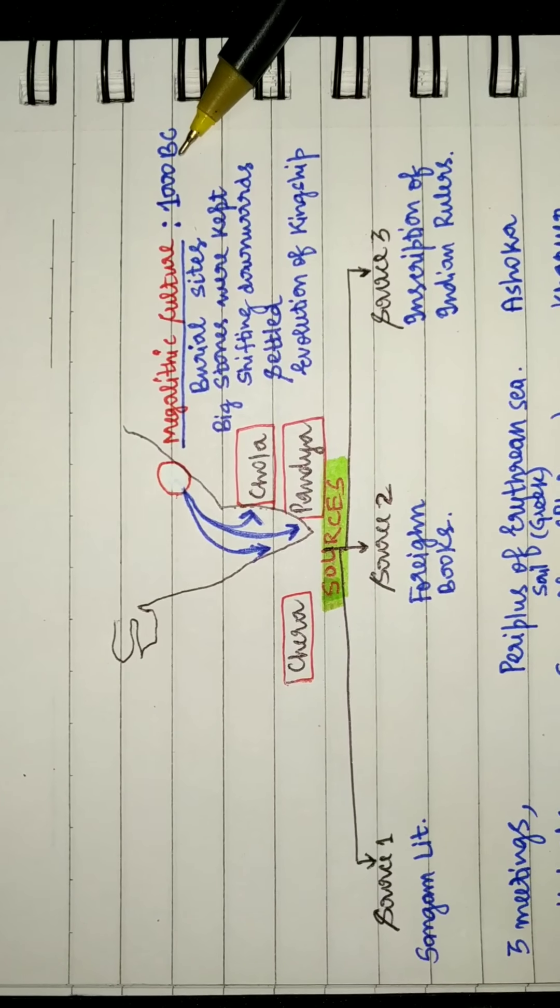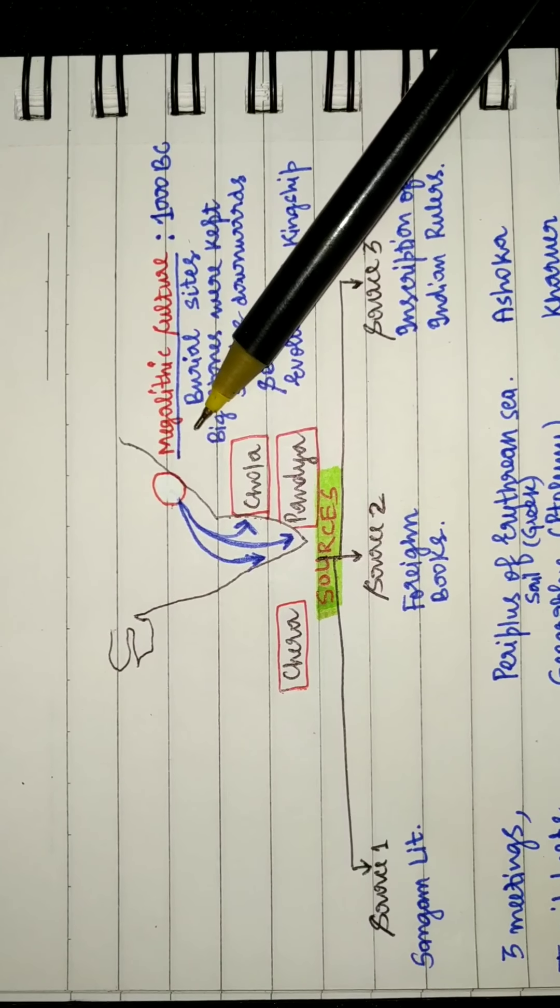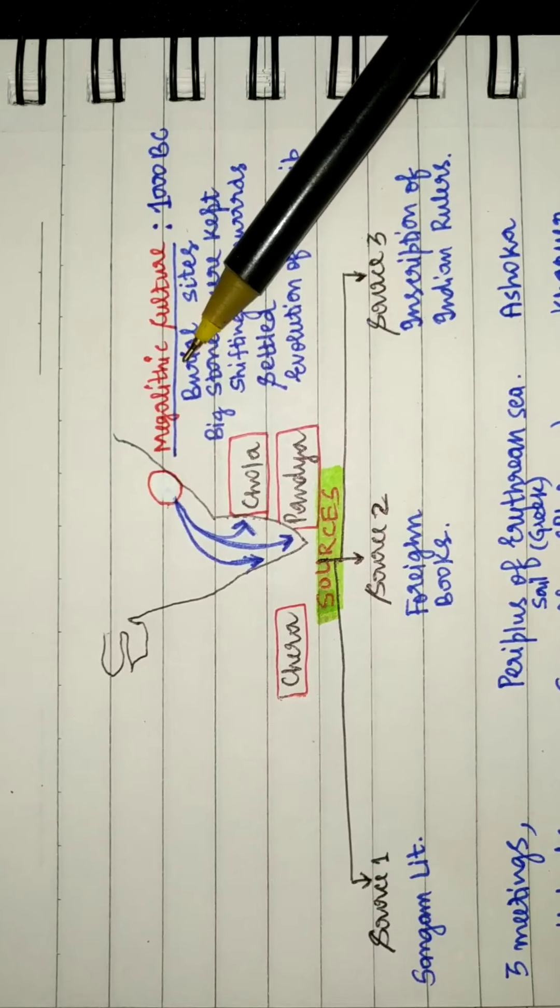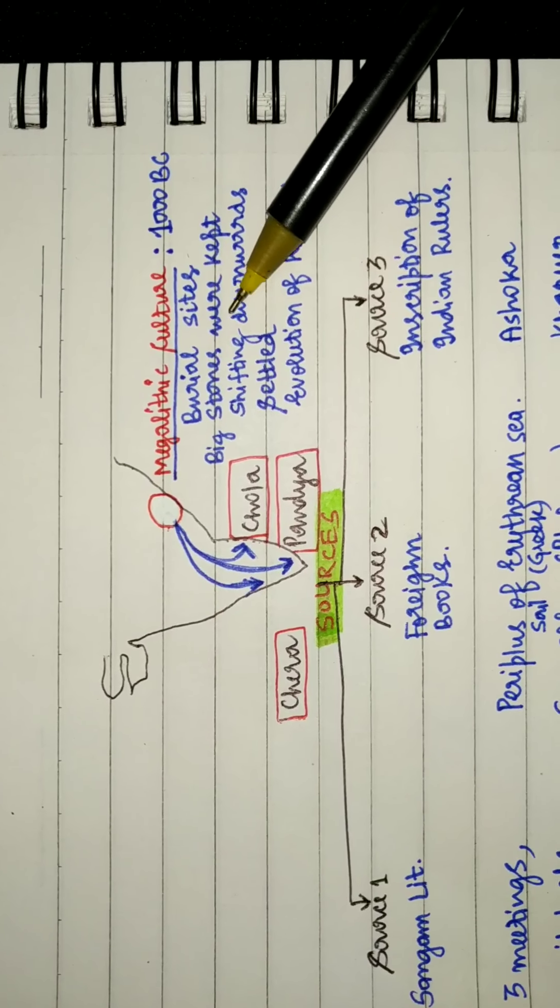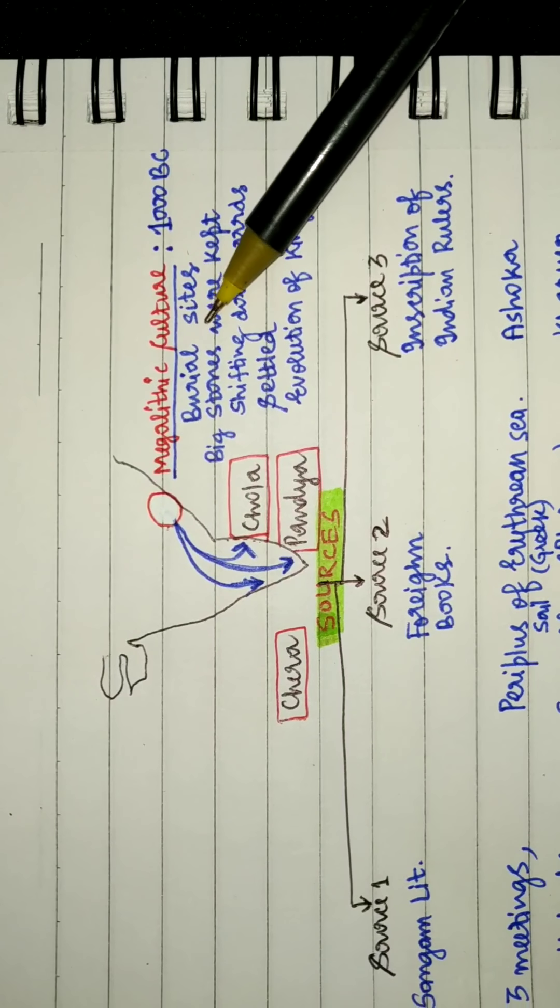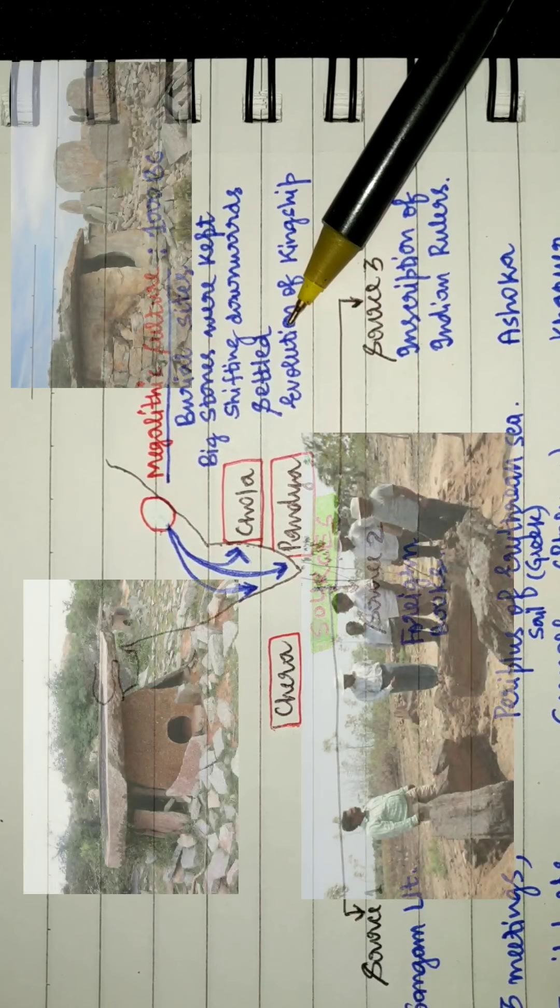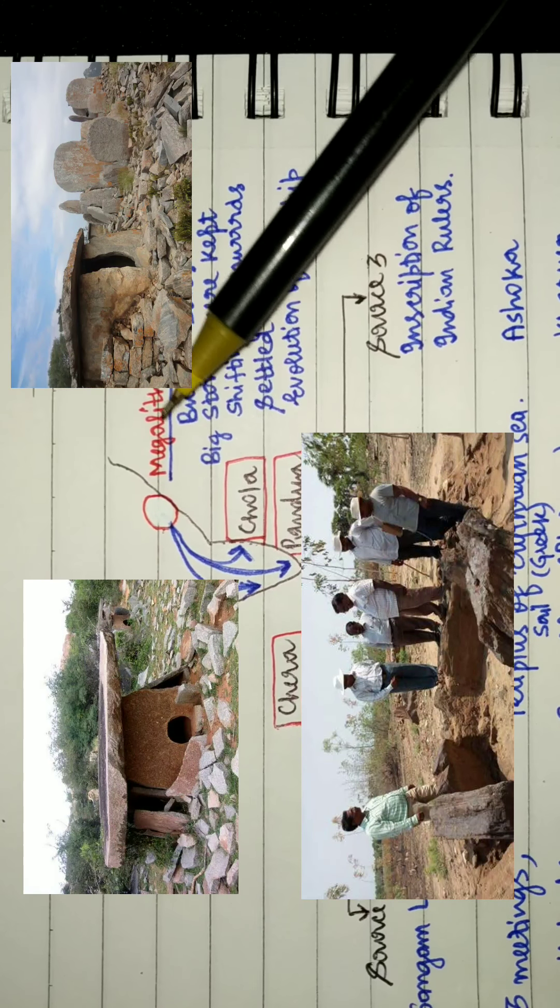Megalithic culture existed around 1000 BC. Mega means large, lithic means stone. Big stones were there at the burial sites of people, hence megalithic.